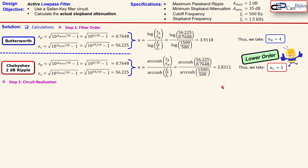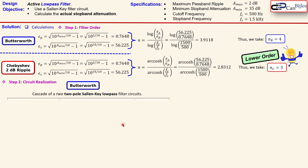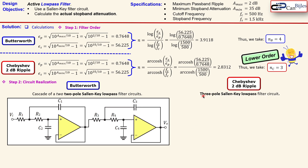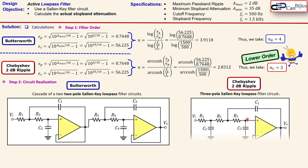Moving to step two — circuit realization. For the Butterworth fourth-order filter we cascade two two-pole Sallen-Key low-pass filter circuits: the first stage has R1, R2, C1, C2 in unity-gain feedback, and the second stage similarly with its own resistors and capacitors. For the Chebyshev third-order filter we only need a single three-pole Sallen-Key low-pass filter circuit with six components and one op-amp, versus eight components and two op-amps for the Butterworth — making the Chebyshev more economical.